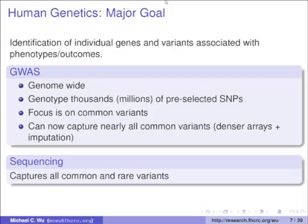GWAS is old hat and honestly didn't find much that was very useful, so as our field works, we move on to the next technology: sequencing analysis. The key difference is that sequencing now allows us to capture both common genetic variation as well as less common — rare — genetic variability. I want to talk about how we analyze rare genetic variability with regard to complex phenotypes and traits.